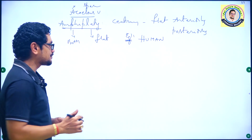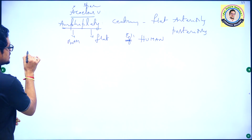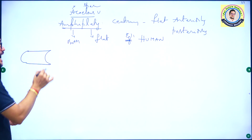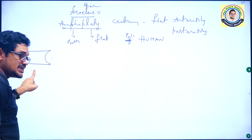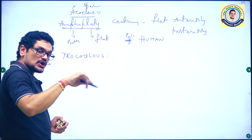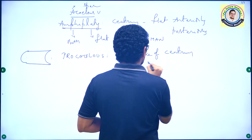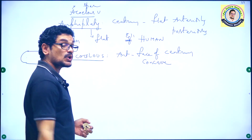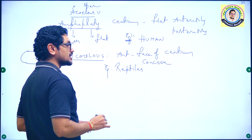So there is no space in amphiplatyan vertebrae. Now, procoelous vertebrae: the anterior face of the centrum is concave and the posterior face is convex — that is called procoelous vertebrae. Pro means anterior, so anterior face of centrum is concave. These are generally present in reptiles.